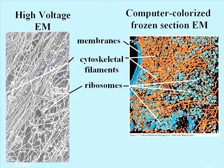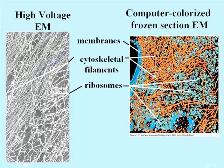Here are two images that reveal that cells do indeed have a fibrous cytoskeletal matrix, and they're not just a bag of sappy cytoplasm — all the particles and organelles are essentially hung on the scaffolding or framework. The left image is a high voltage EM image; the high voltage aspect allows viewing of electrons that penetrate a much thicker cross-section of cells, giving a more three-dimensional view of the cell's ultrastructure. The computer-colorized frozen section electron micrograph on the right shows cytoskeletal filaments that lie just under the cell membrane. This region is called the cortex, and it often contains a high concentration of cytoskeletal filaments, which can explain how a cell maintains its overall shape.